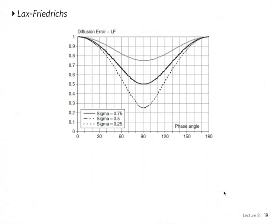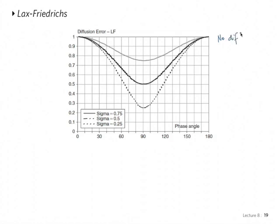Here's the Lax-Friedrichs scheme. This is the diffusion error. You can see that for the diffusion error, the amplitudes are strongly damped for small values of sigma, but not so much for larger sigma. So we use 0.8, which would be around here. You can see why we observed very small diffusion with this scheme. There is no diffusion error for phi equal to pi, right here.